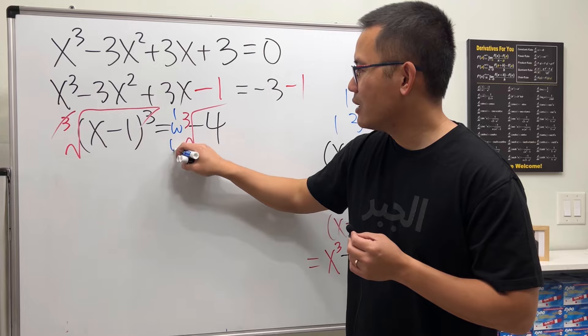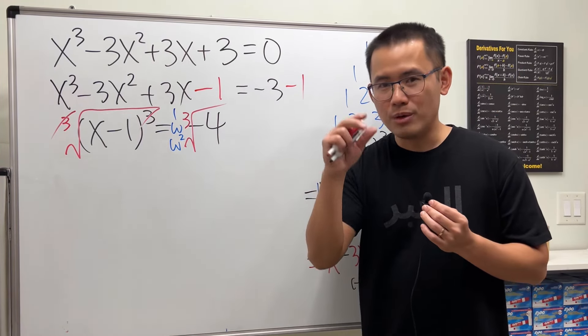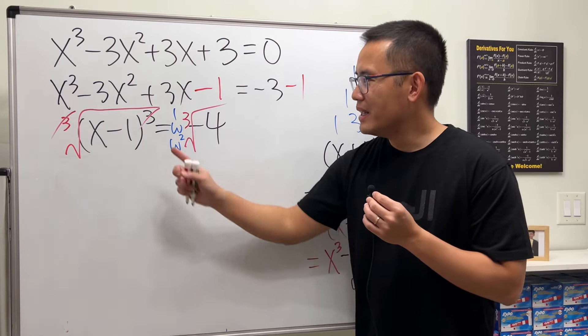Now the omega way: 1, ω, ω². It's just that when you take the square root, remember the plus or minus.